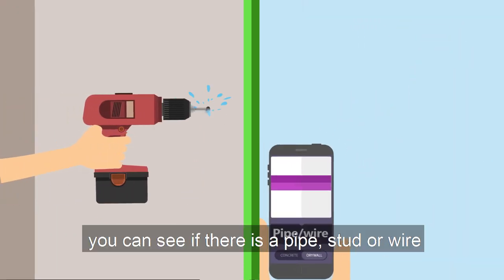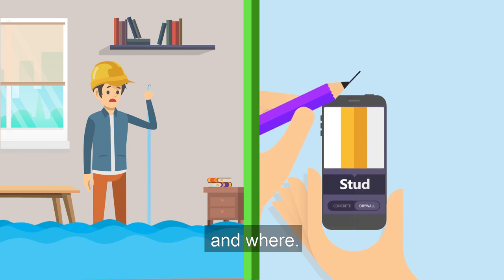With Walabot DIY, you can see if there's a pipe, stud, or wire and where.